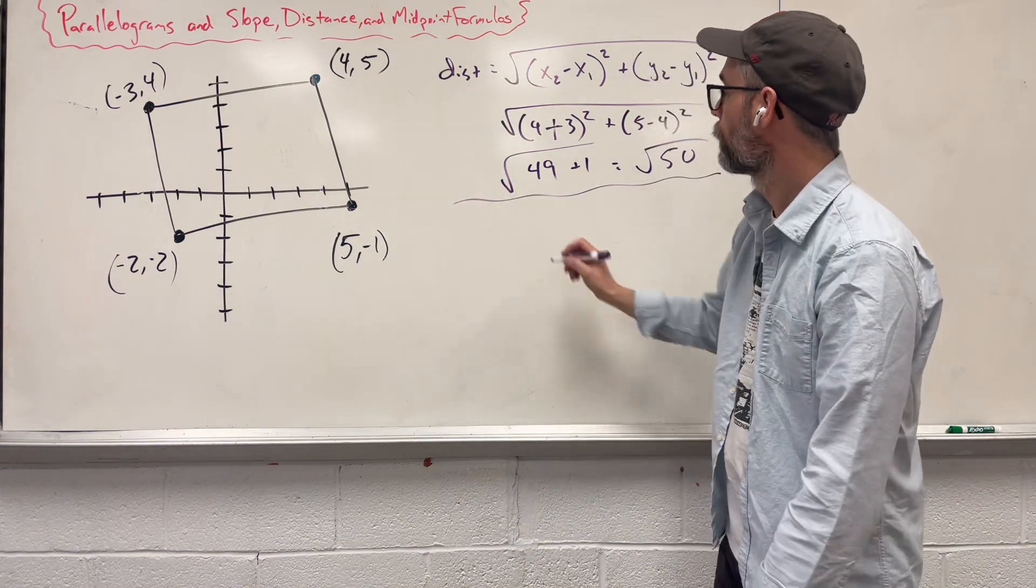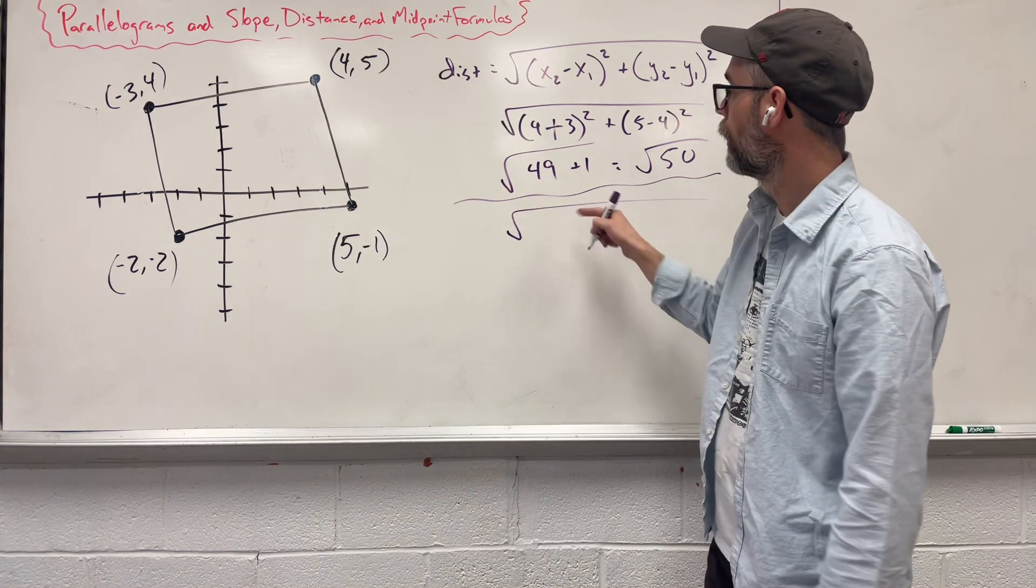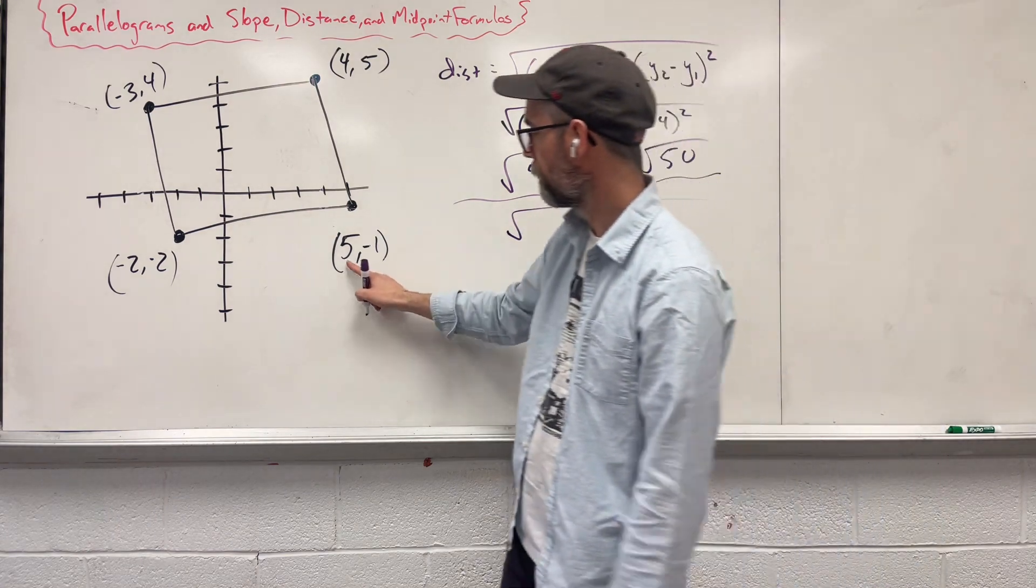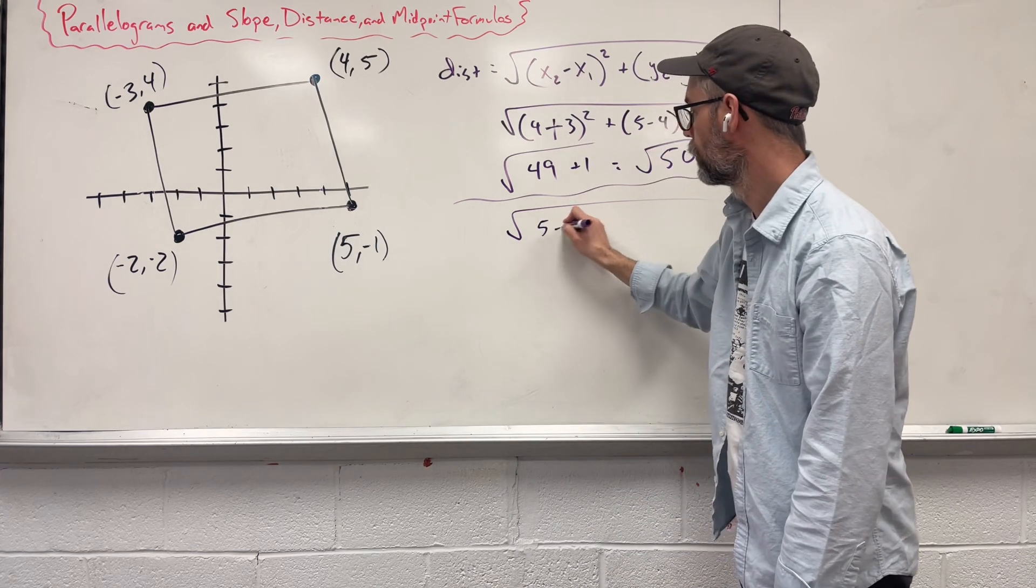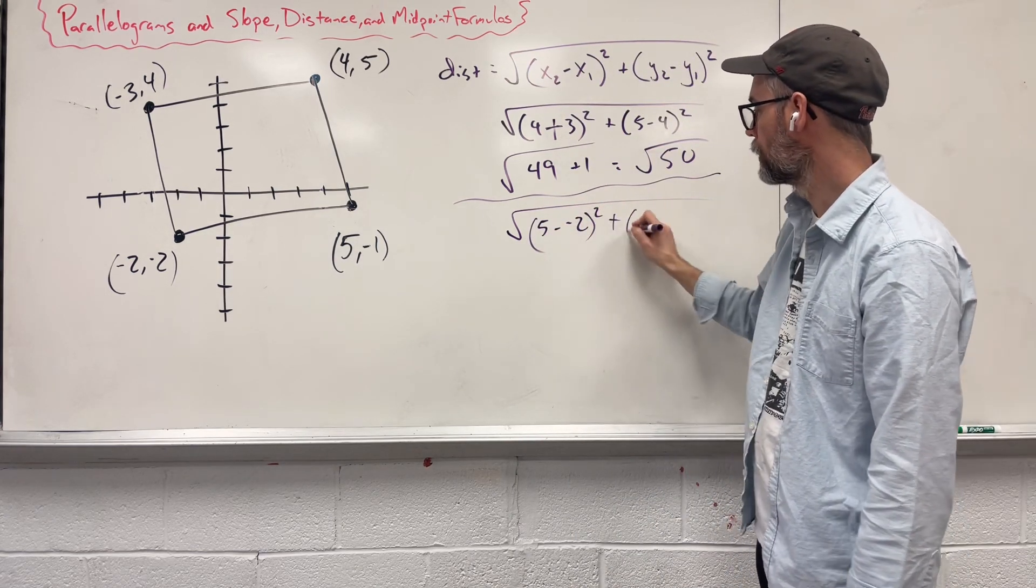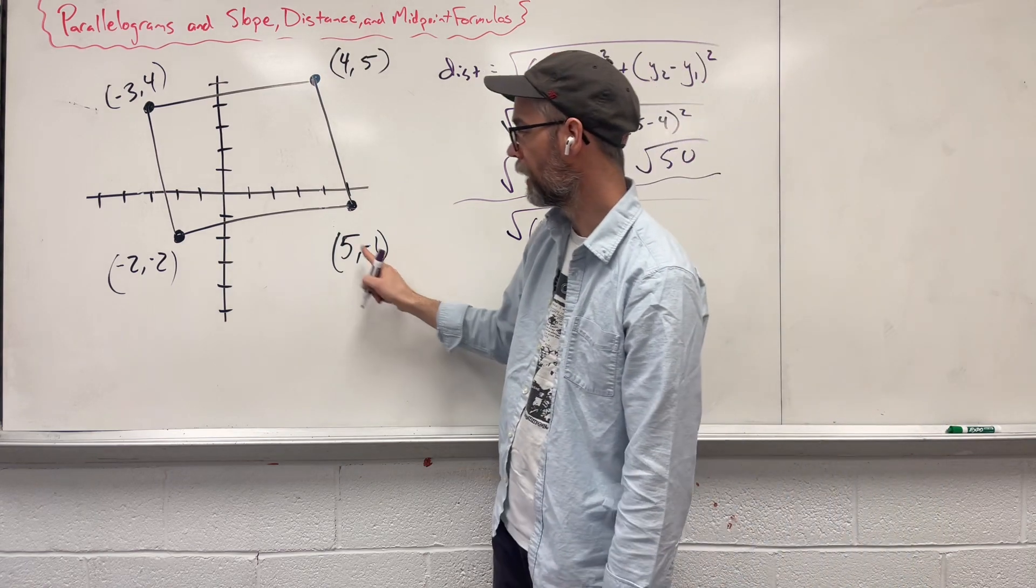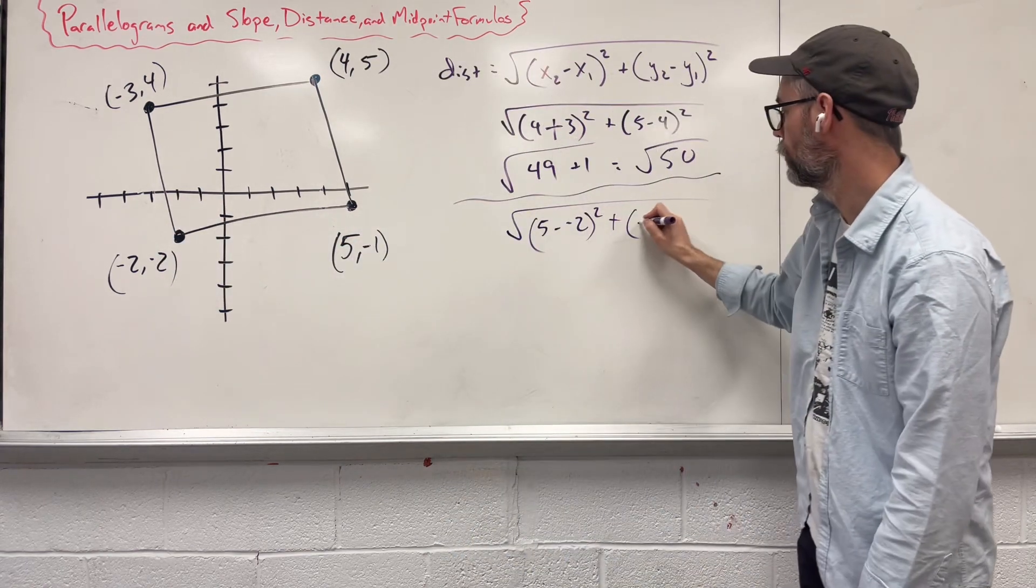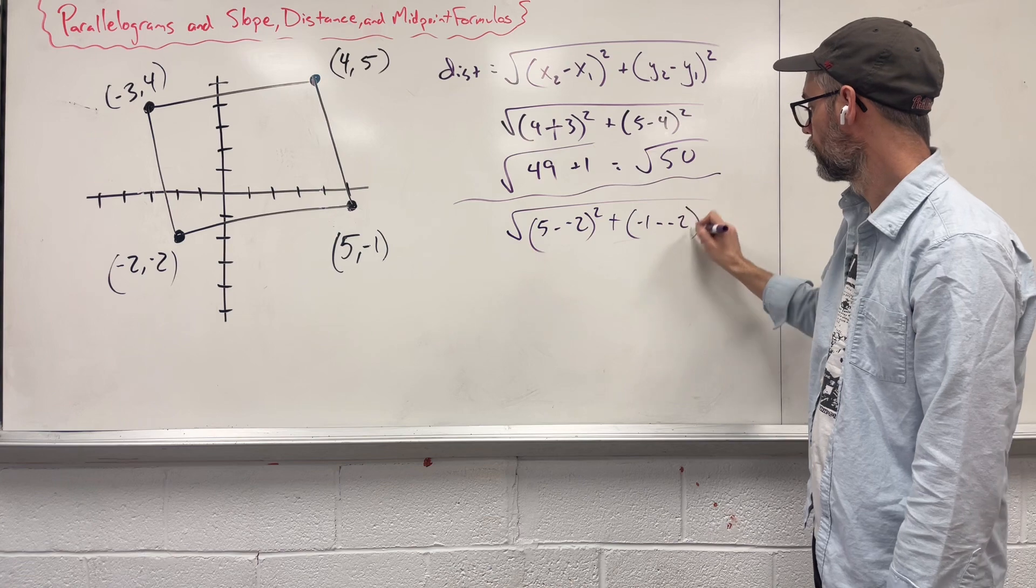Let's do it again on the bottom. Here we have x's first, we're going to say 5 minus negative 2, square it, plus now our y's, negative 1 minus negative 2, square it.